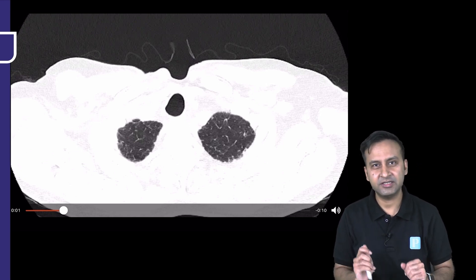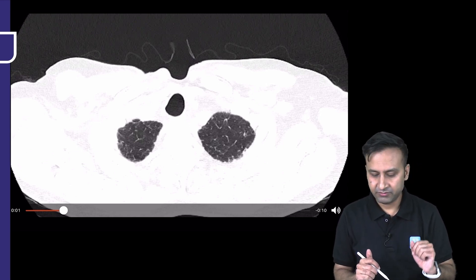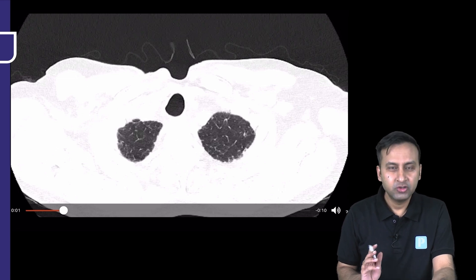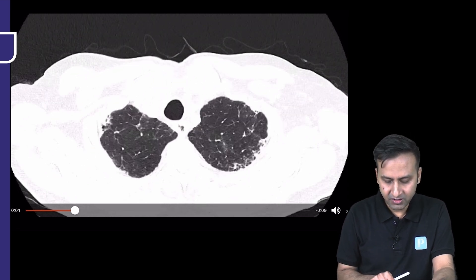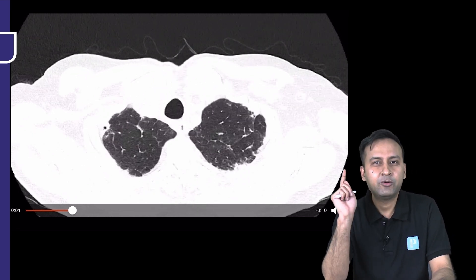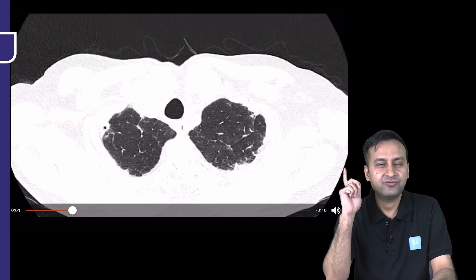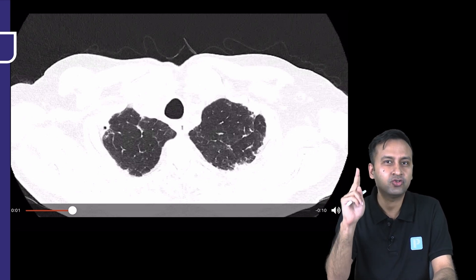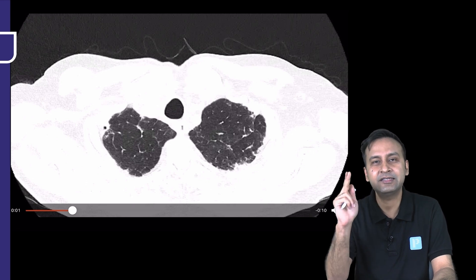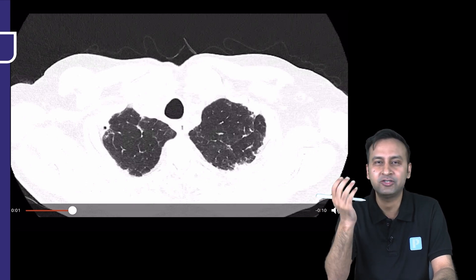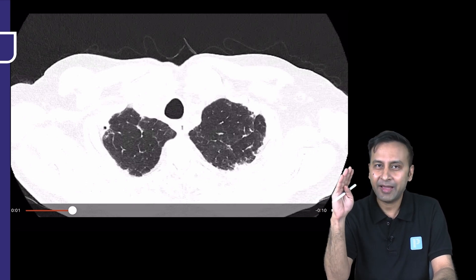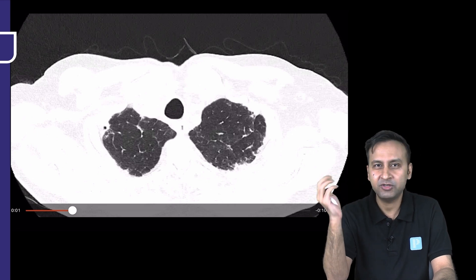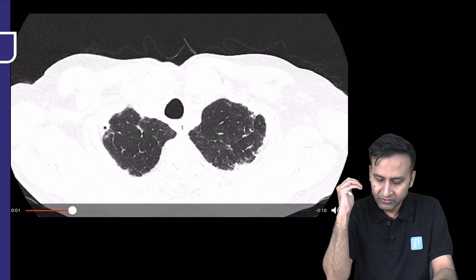Then we'll look at some representative still images from the case as well. When talking about the apices, do you see any abnormality? Remember our discussion on abnormal pathologies in ILDs: first, look for reticulations — lines; second, look for nodules — dots; third, look for ground glass opacity or increased opacification; fourth, look for abnormal hypodensity in the lung parenchyma, which may be due to mosaic attenuation.